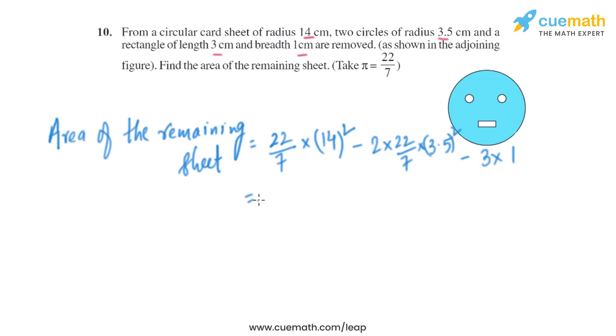So on solving this we will get 616 minus 77 minus 3. So on simplifying this we will get 536 square centimeter. So that will be the area of the remaining sheet.